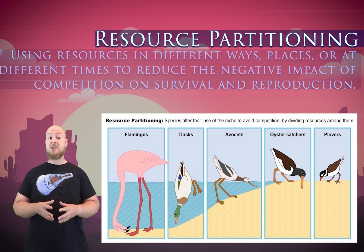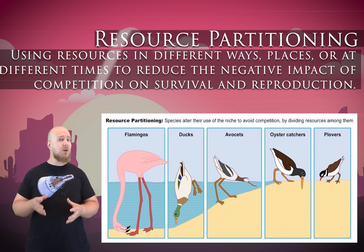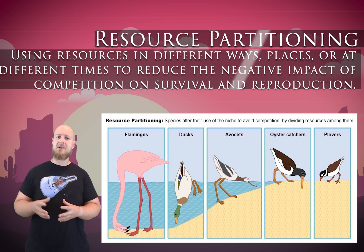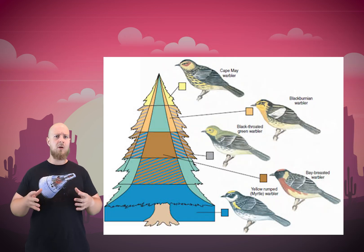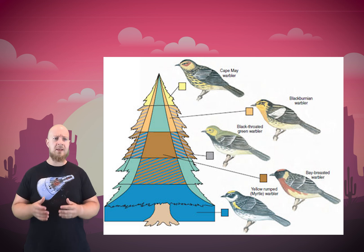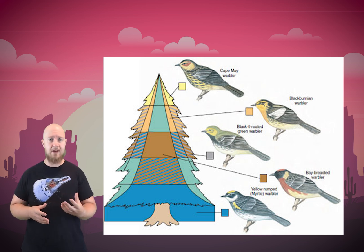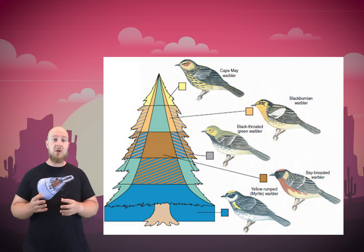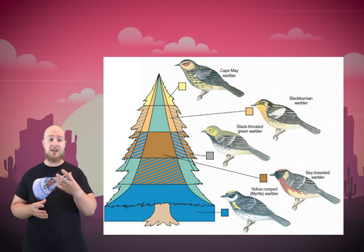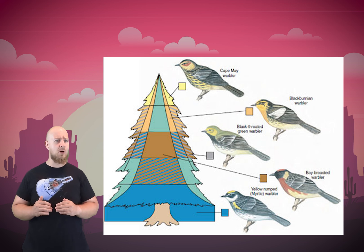Organisms have come up with impressive ways to reduce competition. Resource partitioning, or niche partitioning, is using resources in different ways, places, or at different times to reduce the negative impact of competition on survival and reproduction. All these warblers use a spruce tree as one of their primary resources, but to avoid competition they partition it and have specialized in surviving, seeking shelter, and looking for food in specific parts of the tree. The Cape May warbler specializes in utilizing resources at the top of the tree, while the yellow-rumped warbler specializes in finding food and habitat on the forest floor and near the bottom branches.